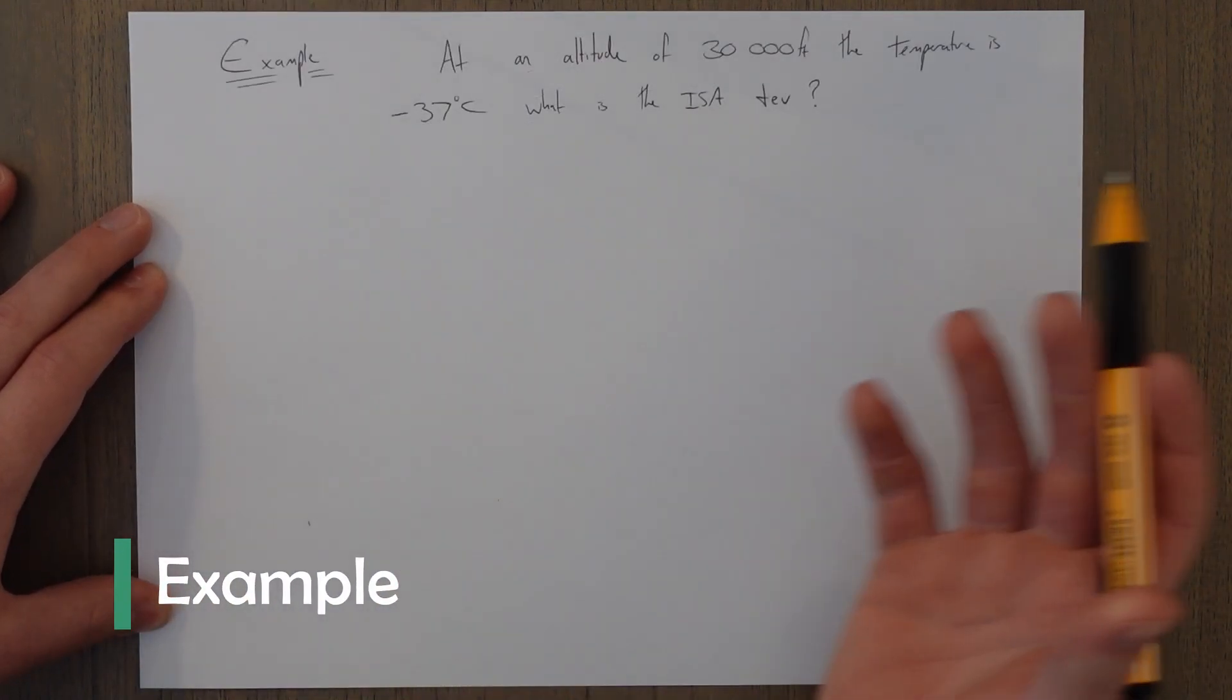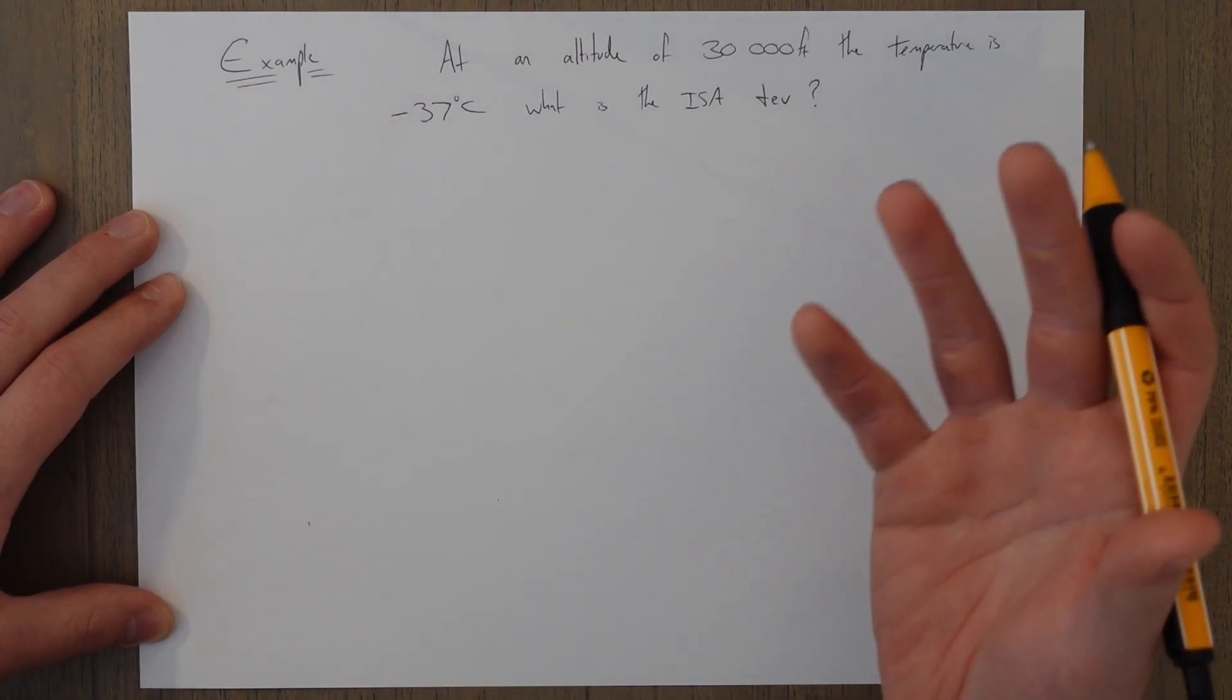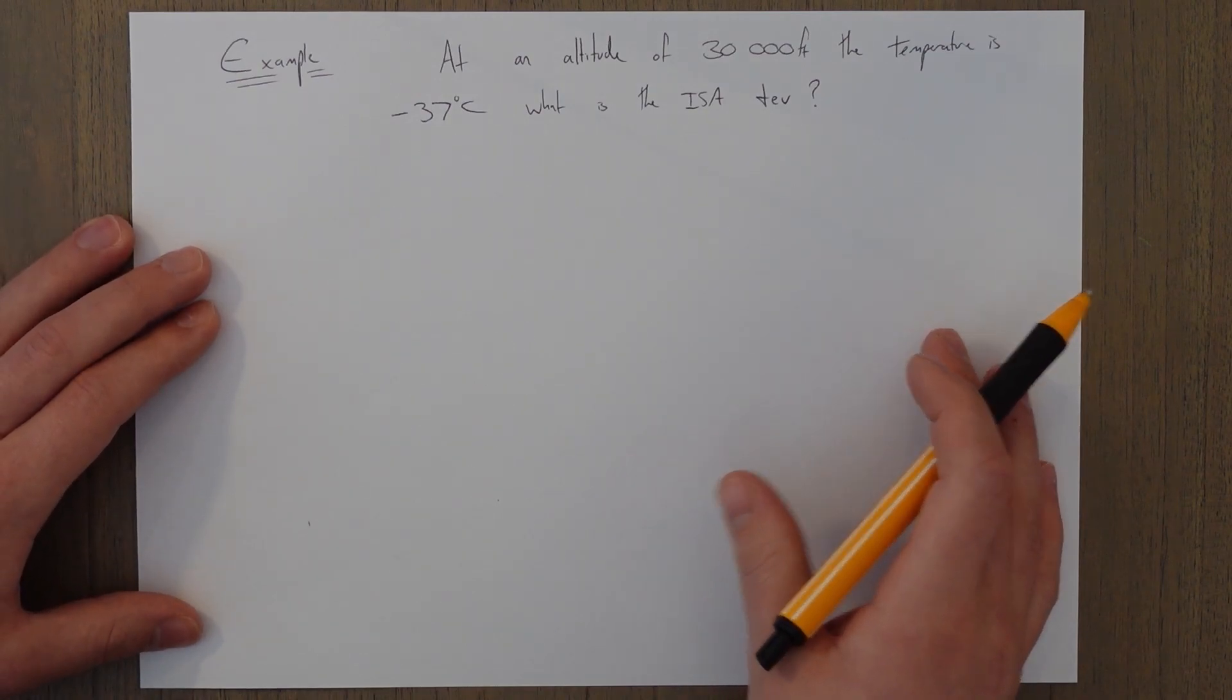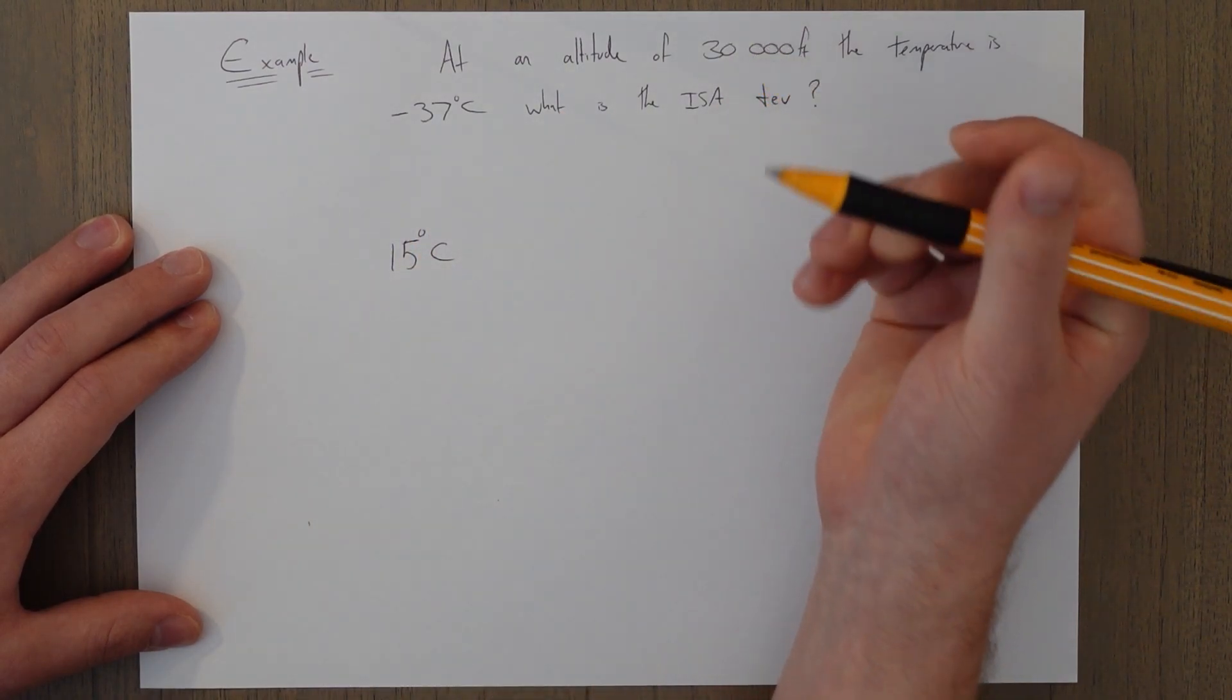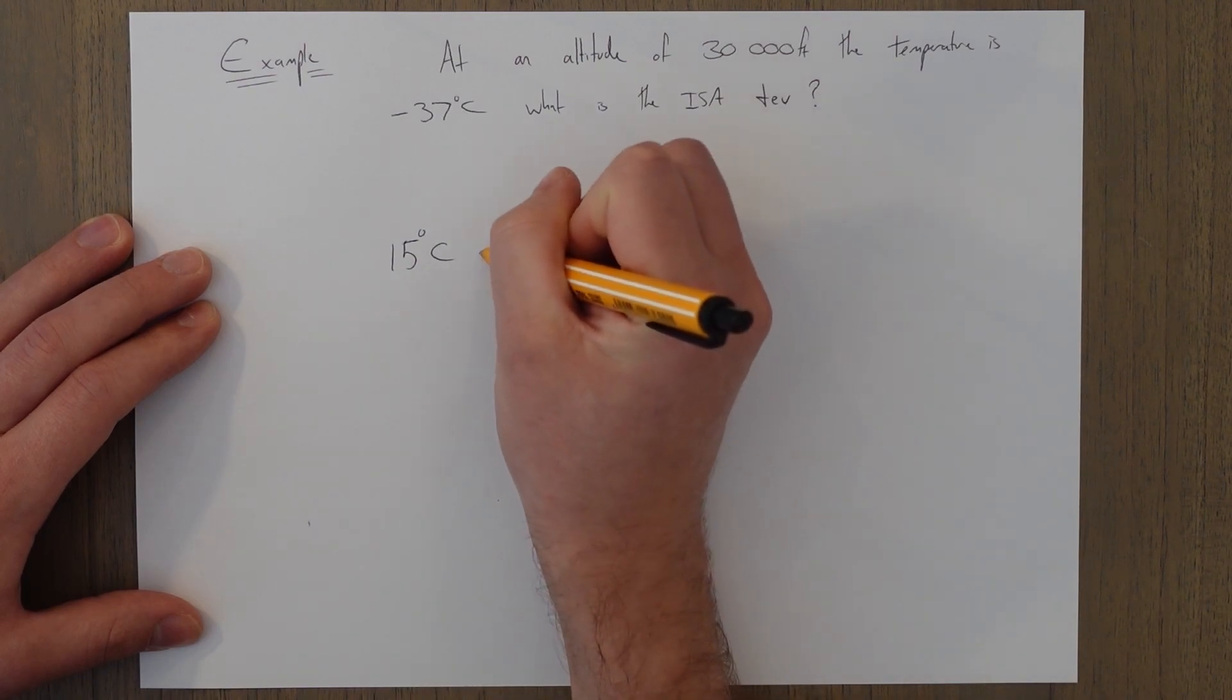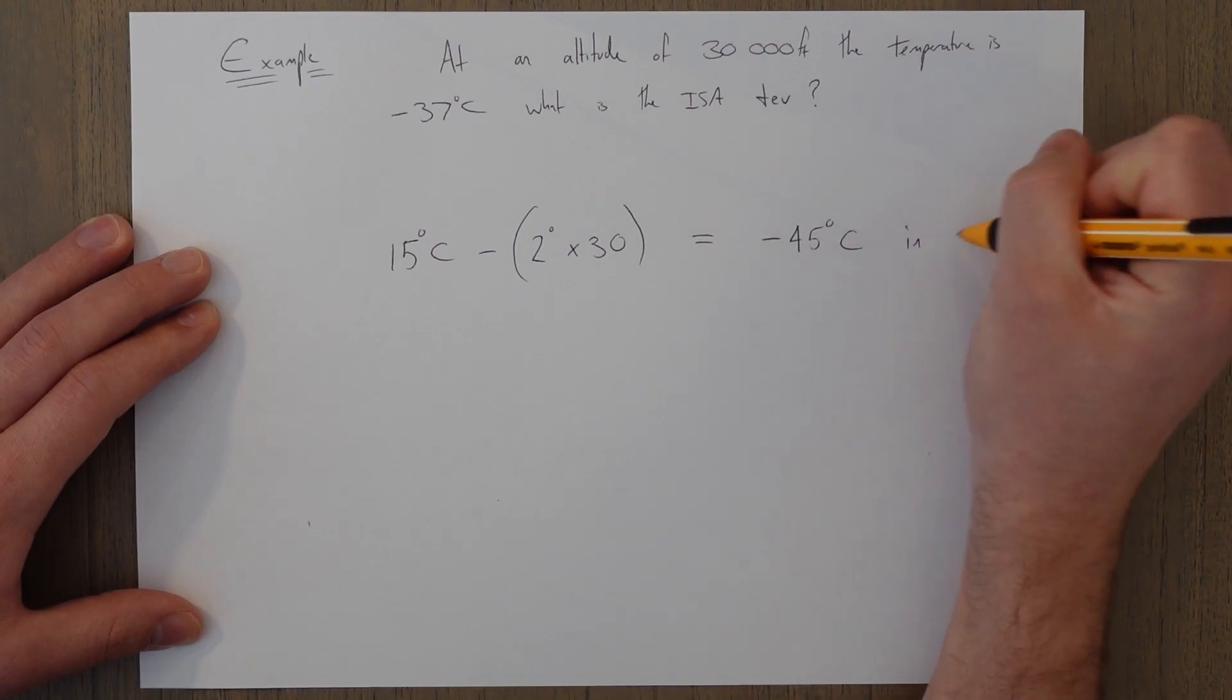Another quick example of ISA deviations: at an altitude of 30,000 feet the temperature is minus 37, what is the ISA deviation? You've got to find out the normal temperature at 30,000 feet in the ISA atmosphere compared to this and find out what the deviation is. We've got 15 degrees standard at sea level, we're at 30,000 feet, we're going to drop by the temperature lapse rate which is 2 degrees per thousand feet. There's 30 of them, so it's 15 minus 60, and that's going to equal minus 45 degrees Celsius in ISA conditions.